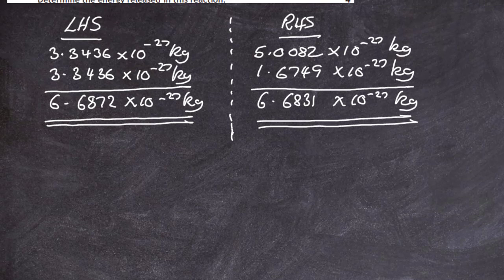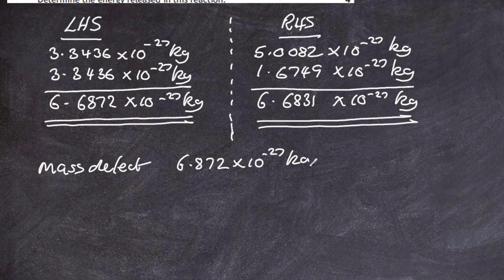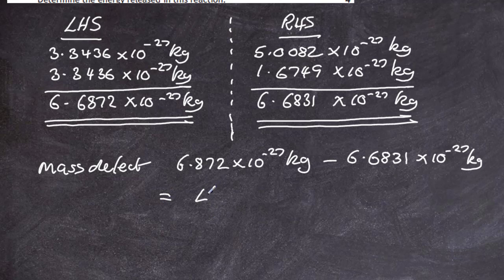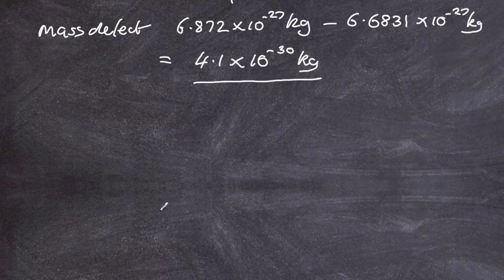So there is our left hand side and our right hand side, and you can see there is a mass defect — there is more mass on the left hand side than on the right hand side. That mass has been changed into energy according to Einstein's equation E equals mc squared. The mass defect is found by subtracting: 6.6872 times 10 to the minus 27 kilograms minus 6.6831 times 10 to the minus 27 kilograms, and that mass defect is 4.1 times 10 to the minus 30 kilograms.